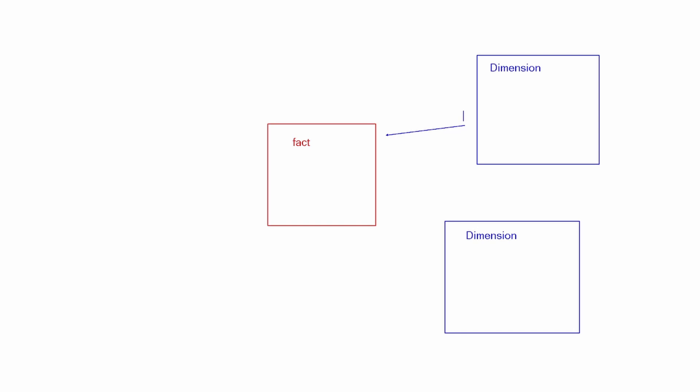The first thing we're going to talk about is cardinality. The traditional star schema has a fact table surrounded by dimension tables. This is the typical star schema you're going to see inside of Power BI. The ideal relationship between a dimension and a fact table is the one-to-many relationship, where the dimension is the one side and the fact table is the many side. This relationship type is known as cardinality.